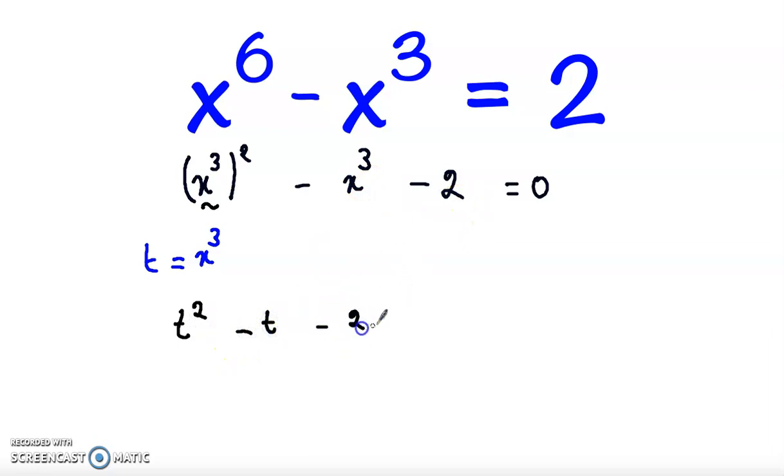Now we have a quadratic equation. We can solve it using the quadratic formula, but a better method is to find two numbers whose product equals minus 2 and sum equals minus 1.